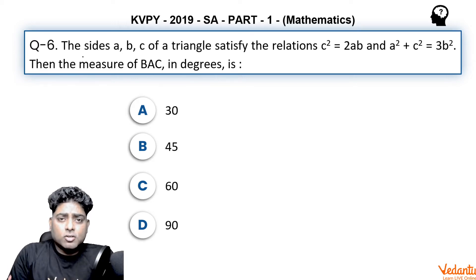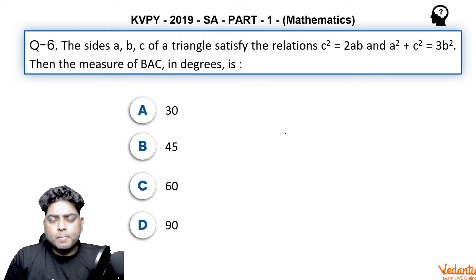It is related to the topic solution of triangles, question number 6. It says the sides a, b, c of a triangle satisfy the relation c² = 2ab and a² + c² = 3b². Then the measure of angle BAC in degrees is: So we have to find angle A, and two relations are given.